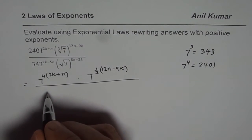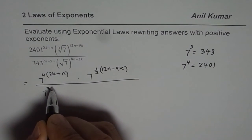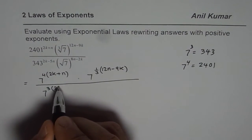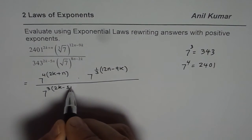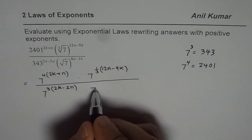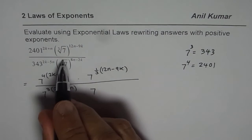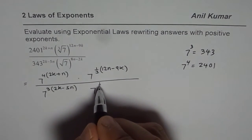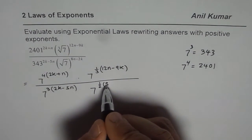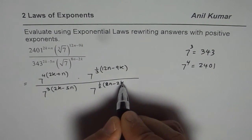343 is 7 to the power of 3. So I will write this as 7 to the power of 3 times 2k minus 5n. And the next term is 7 to the power of, since this is square root, that means half, right? Half of 8n minus 2k, correct?